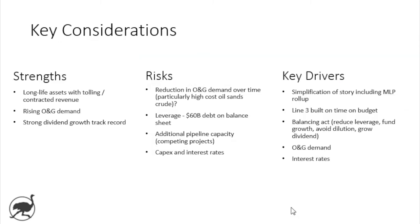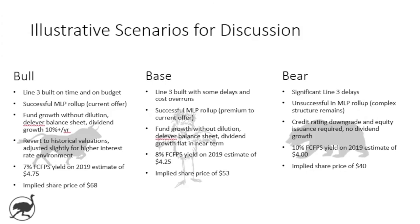Those are the key considerations. Let's jump in and look at some illustrative scenarios for the stock. As a mini disclaimer, this is by no means exhaustive — there are so many things to look at here. But I always find it interesting to look at three scenarios: what could happen if everything's going well and what share price could we be driving towards, what a base case looks like, and what our downside is if things don't go well. Let's start with the bull case — this is if everything starts to go the way management would want in terms of execution.